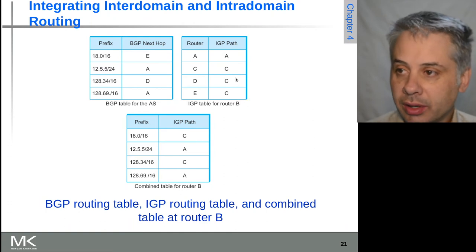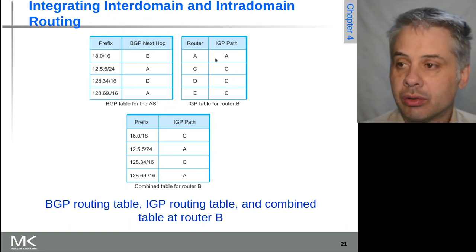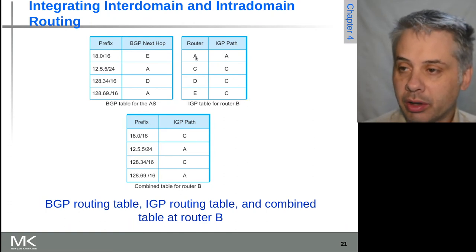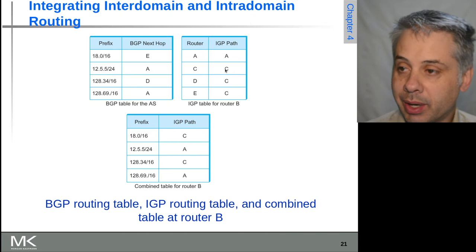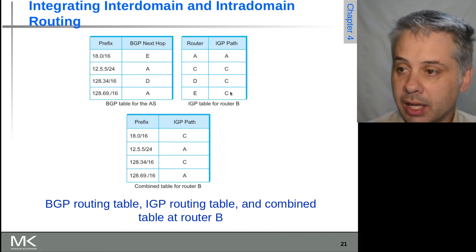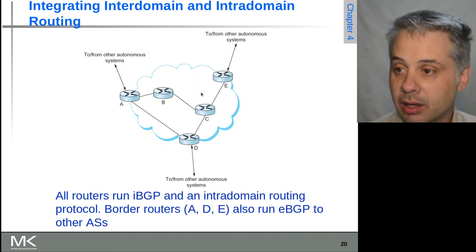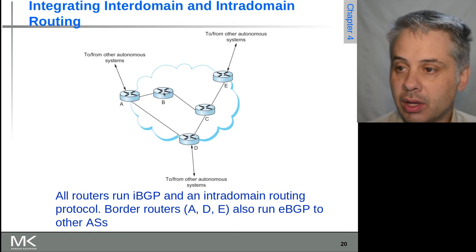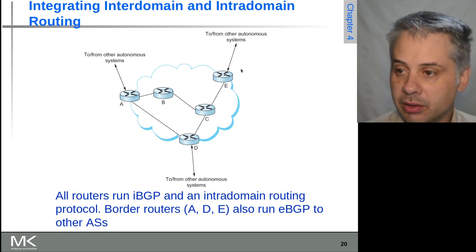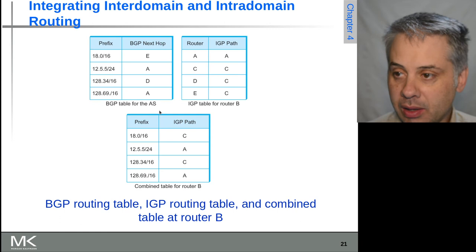Internally, router B knows it can get to router A directly and it can get to router C directly, but for routers D and E it needs to go via router C, because the shortest path from B to D or E is via C.